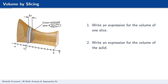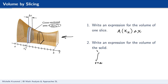The volume is just the area of the face times the thickness. A(x_k) represents the area of the cross section at a certain x value. So the volume is A(x_k) times delta x. To find the total volume, we add up many slices from x equals a to x equals b using a definite integral: the integral from a to b of A(x) dx.